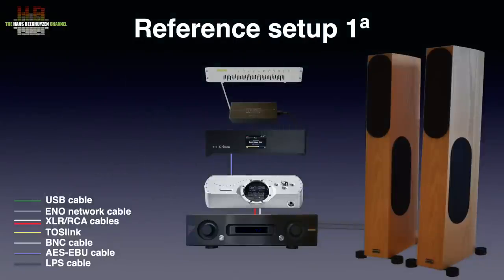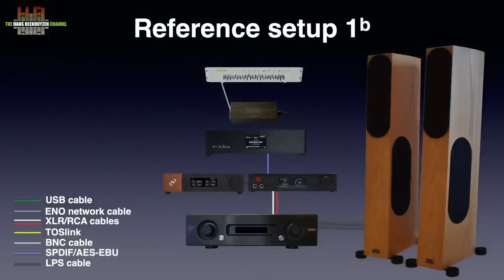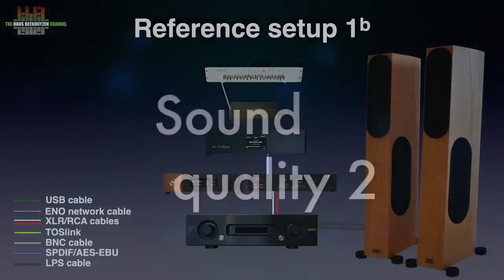The Chord Dave DAC was replaced by the Mytek Brooklyn MQA-enabled DAC, powered by the Ferrum Hypsos power supply. The same cabling was used - to the Grim Audio MU1 over Siltech AES/EBU cable and to the amp over Grim Audio SQM XLR cables. Although the overall sound quality is of course lower than that of the Dave, placing the Brooklyn on the board with Moon Gel gave an improvement along the same lines as with the Dave. And even placing the Ferrum Hypsos power supply on top of the Brooklyn gave a slight further improvement.